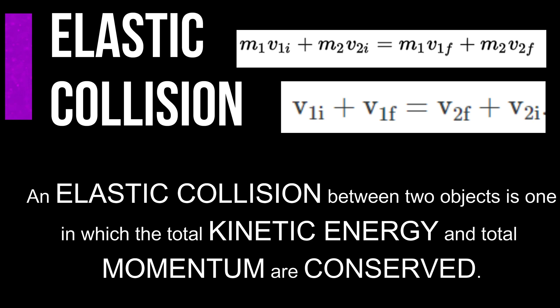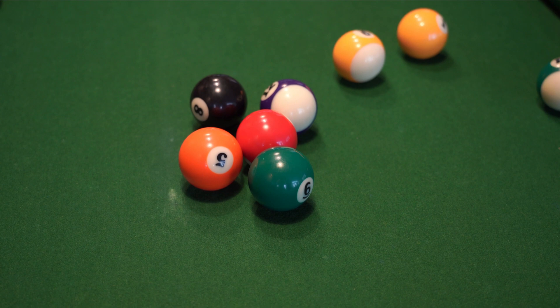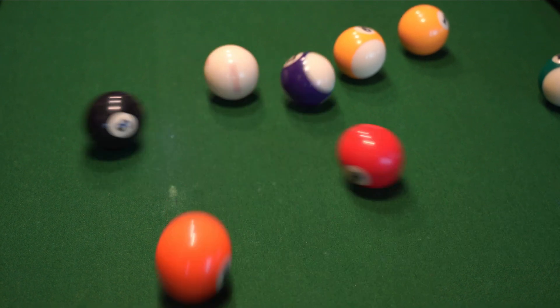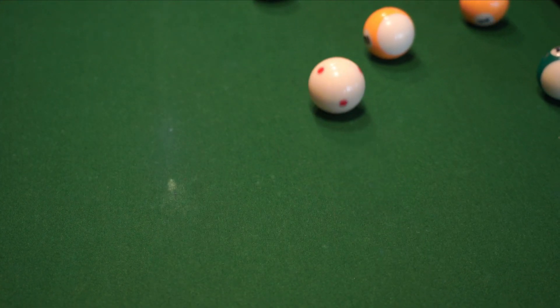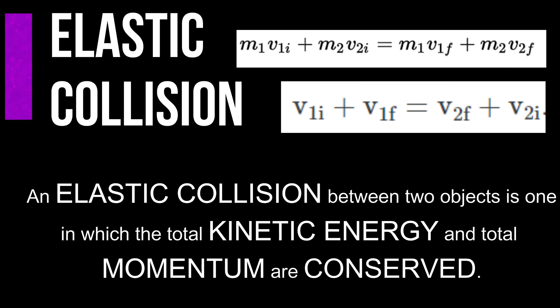A good example of an approximation for elastic collision is a pool table, where one ball hits another ball. Usually the kinetic energy and momentum are very well conserved here. You do have some kinetic energy transferred to sound and some friction as well, but it is a good approximation, which is why elastic collision equations are typically used for those types of problems.